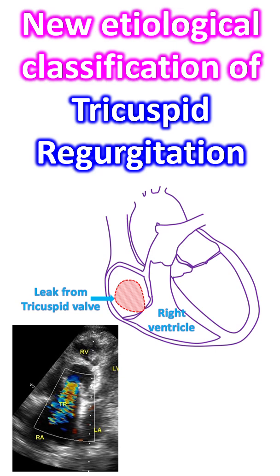A new comprehensive classification has been introduced by the Tricuspid Valve Academic Research Consortium. There are three categories in this classification, with a few sub-classifications as well.